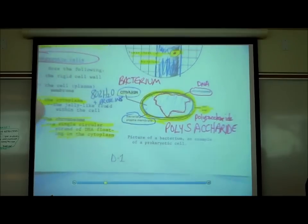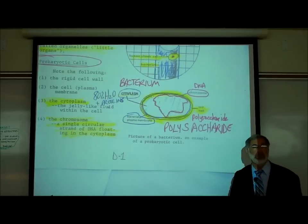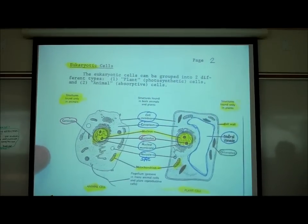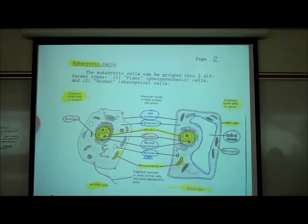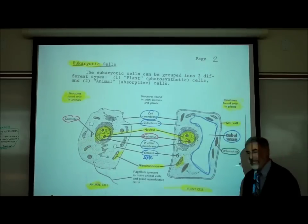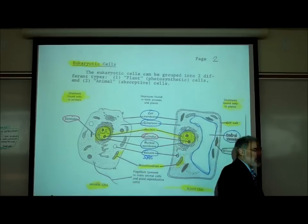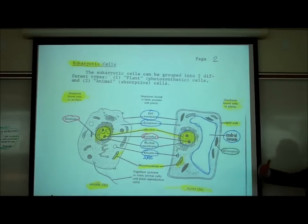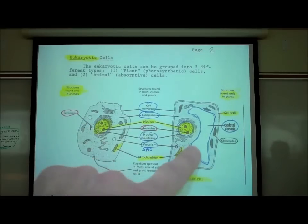That's an example of a prokaryotic cell. We will be looking at bacteria under the microscope in a few weeks. Now let's consider eukaryotic cells. 'Eu' means true, 'karyo' means nucleus — so true nucleus. Examples of cells that have a nucleus, are much larger, and have many other internal organelles are both animal cells pictured on the left and plant cells pictured on the right.